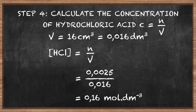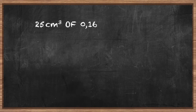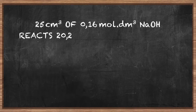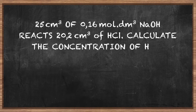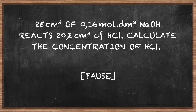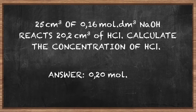Now, here is a problem for you to try. 25 cm³ of 0.016 mol per decimetre cubed sodium hydroxide reacts with 20.2 cm³ of hydrochloric acid. Calculate the concentration of the hydrochloric acid. Pause the video for a short while so you have time to finish before the answer is shown. Did you get the answer of 0.20 mol per decimetre cubed? Take a moment to run through the calculation.